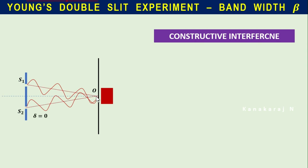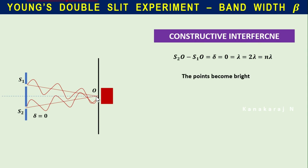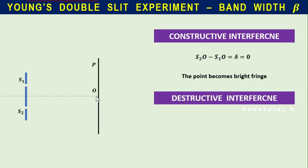The path difference between S2O and S1O — the difference in path traveled by the wave — is called the path difference, denoted delta. When S2O − S1O = delta = 0, λ, 2λ, or nλ, that particular point gives constructive interference and becomes a bright band.